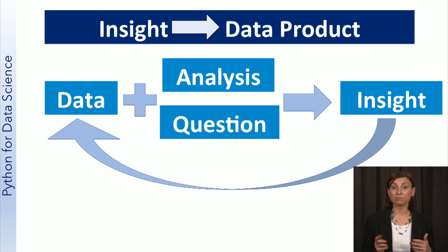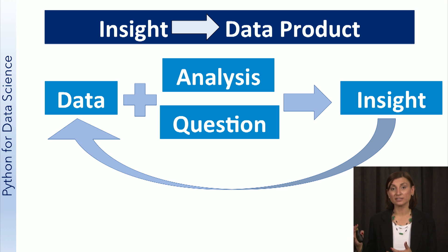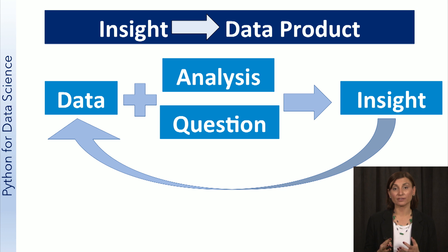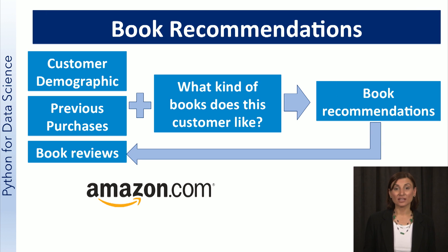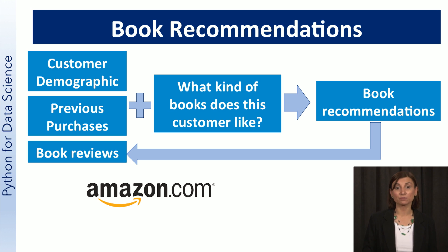Another important point to recognize is that data science is not a static, one-time analysis. It involves a process where the models we generate lead to insights, and those insights are then improved by gathering further empirical evidence or simply more data. For example, a book retailer like Amazon.com can constantly improve the model of a customer's book preferences using customer demographics, his or her previous purchases, and prior book reviews by the customer.